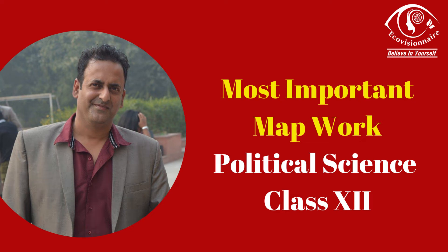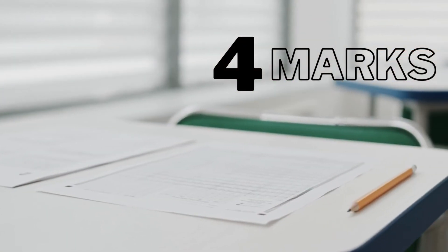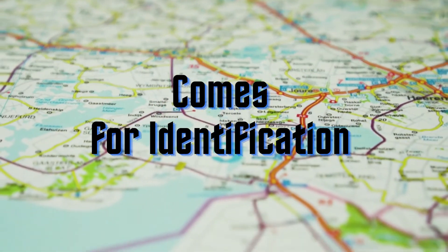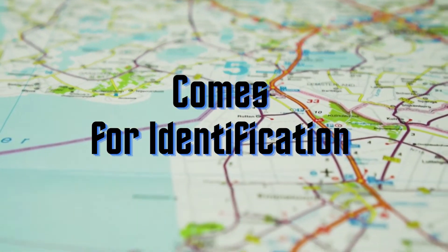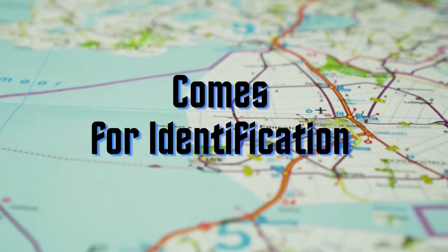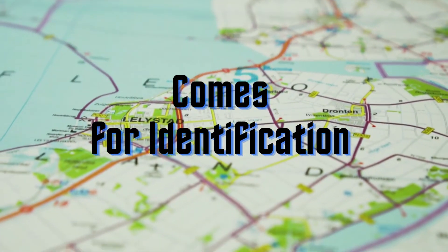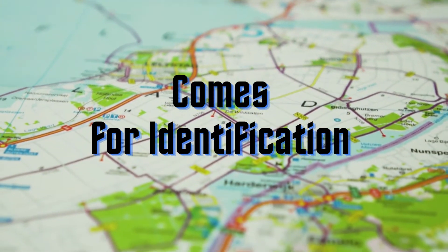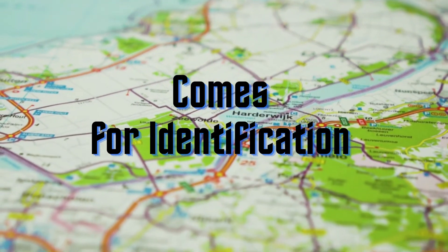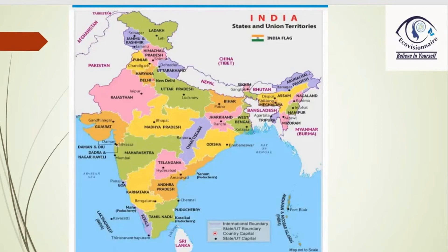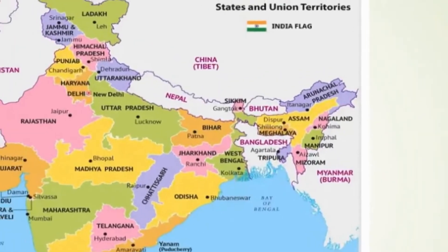Hello everyone, this is Amit Aura from Ecovisioneer. We will be discussing political science mapwork India today. As you know, the mapwork is for four marks in boards. Mapwork is not for labeling — mapwork is for identification. We will be very careful while identifying these states. There are alphabets marked in the map which are to be written in the answer sheet with the state or place asked. Before we start, we should first know how we remember these 28 states and how we will locate them, using the new map of India.